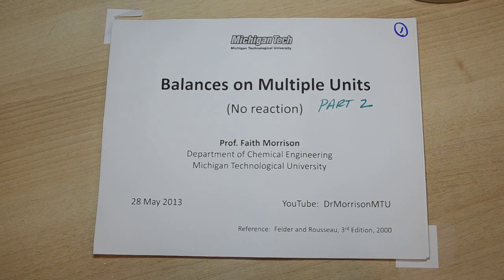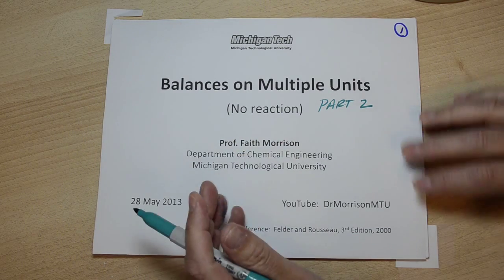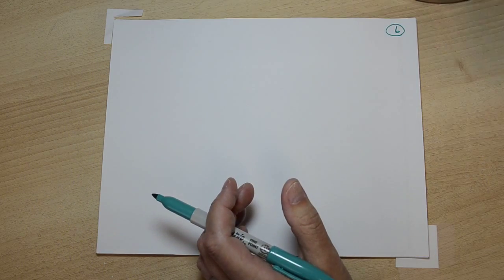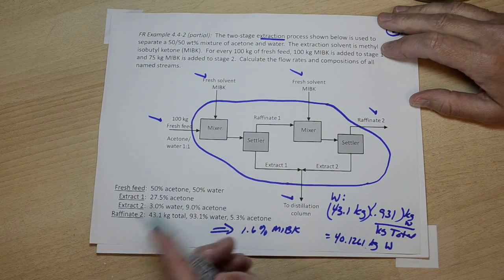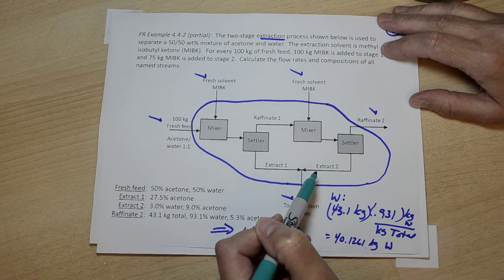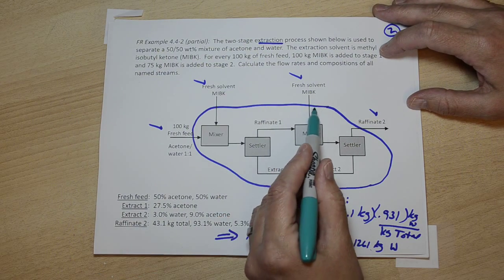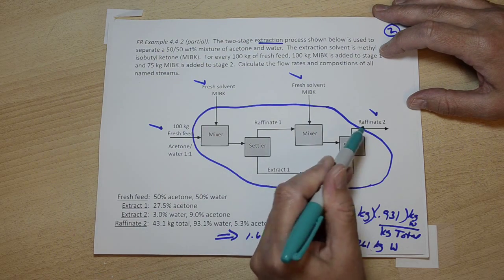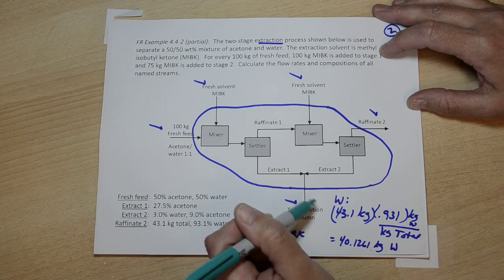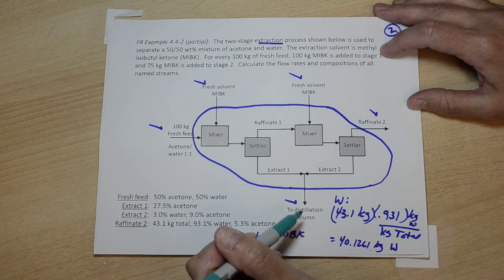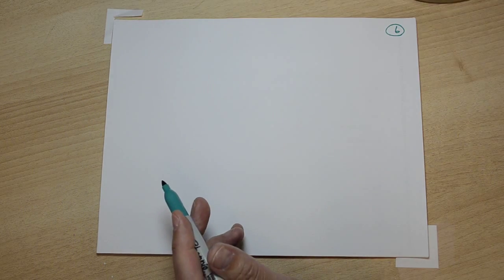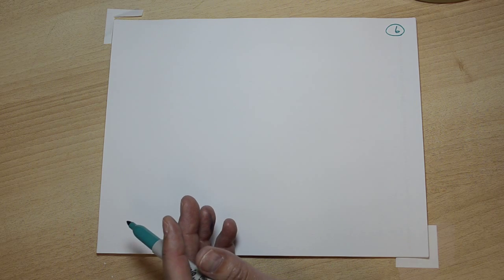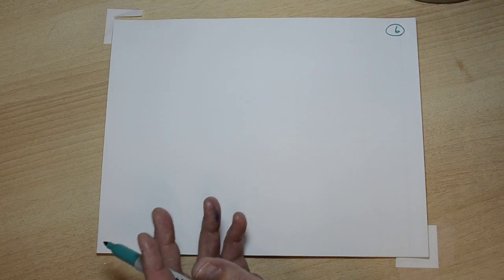This is the continuation of a solution of a multiple-unit mass balance problem. The problem we are considering is an example from Felder and Rousseau of a two-stage extraction process. In part one we did the overall balance and found the composition of the stream going to the distillation column. Now it's time to go inside that loop and figure out what balances to do next.